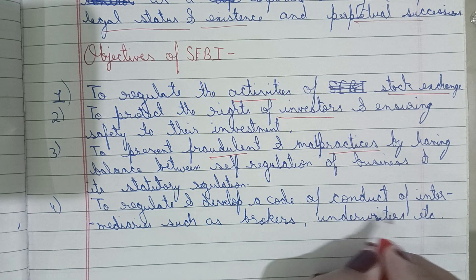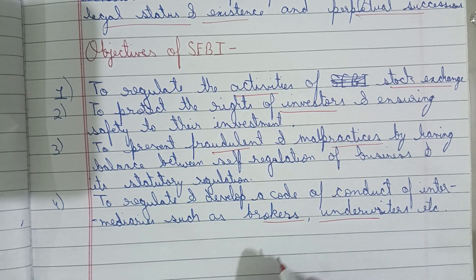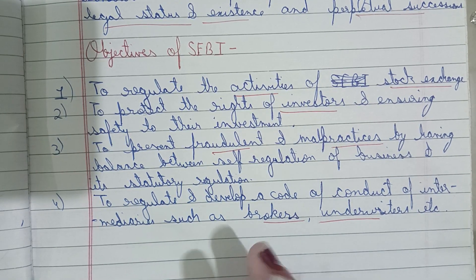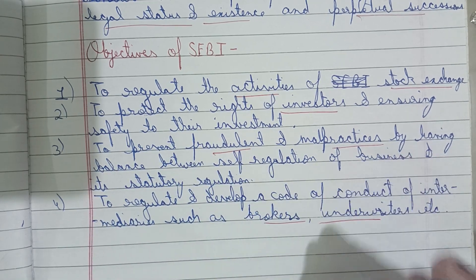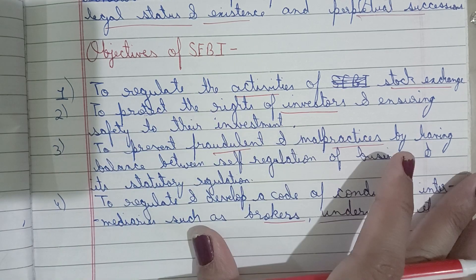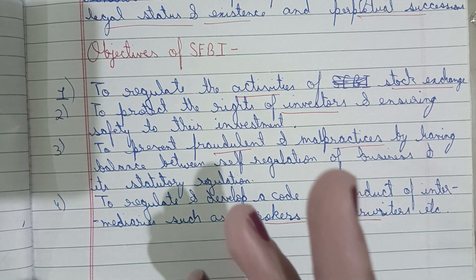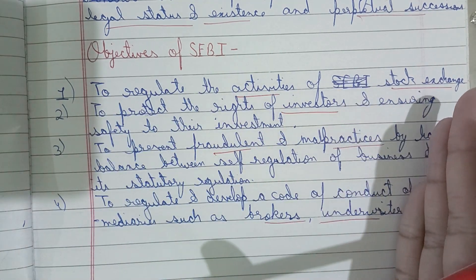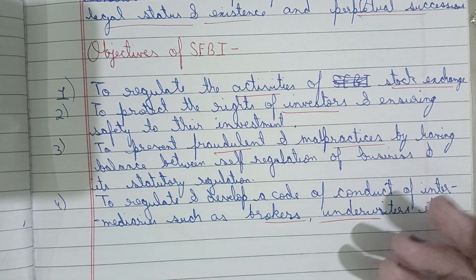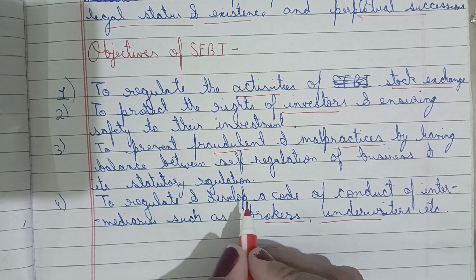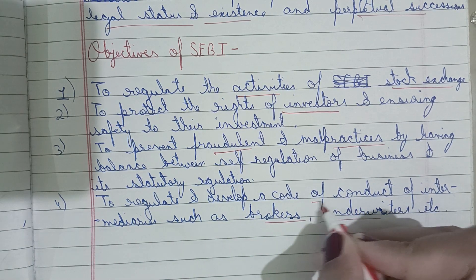Another objective is to regulate and develop a code of conduct for intermediaries such as brokers, underwriters, and other middlemen who help investors and companies buy and sell shares. SEBI ensures that all those involved in the trading procedure, among investors and companies who buy and sell shares and securities, properly follow code of conduct and regulations.